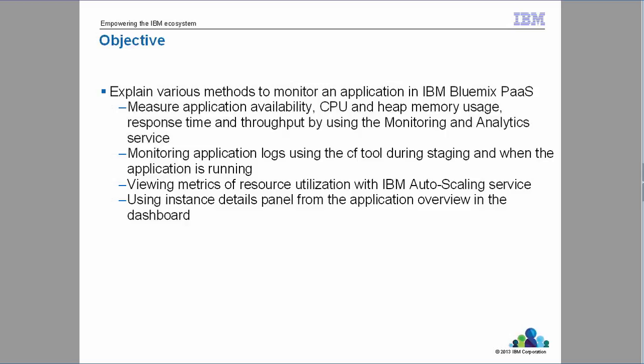The methods covered include measuring application availability, CPU and memory usage, response times, and throughput using the service. We can also do monitoring using logs through the command line and by looking at the logs when the application is running in the logs folder. We will also talk about resource utilization in the IBM Bluemix Autoscaling service when you configure an application to perform autoscaling. You can refer to section 3.2 for more in-depth details. The last topic covered is the dashboard of the monitoring and analytics service.